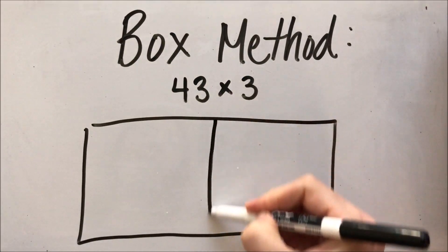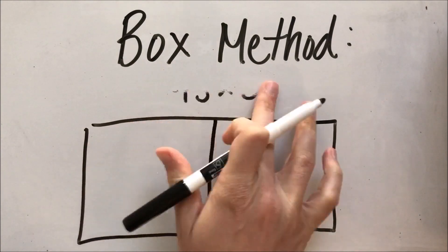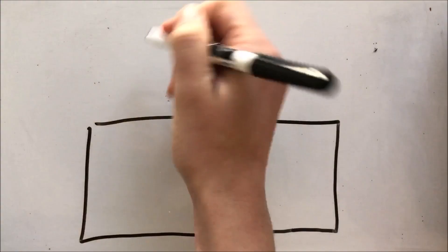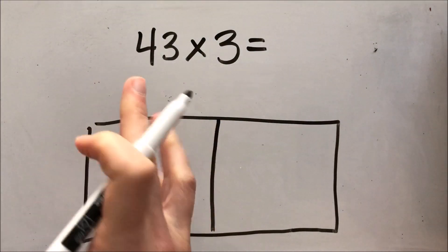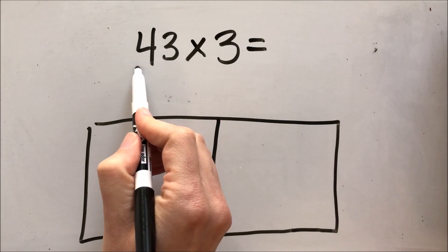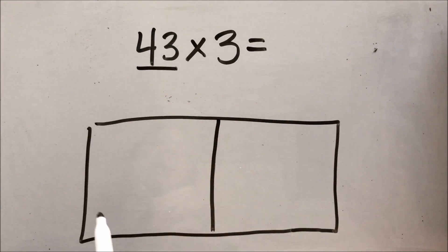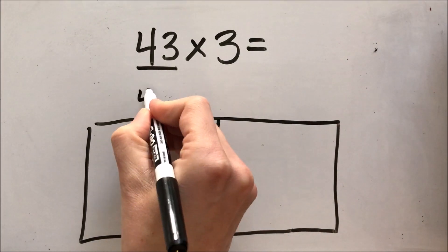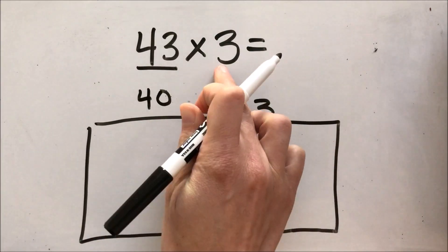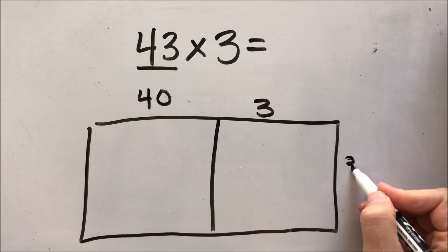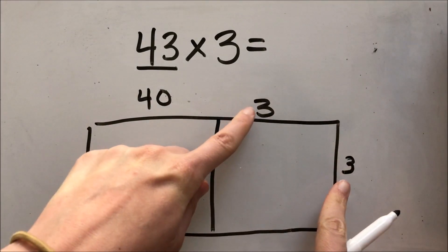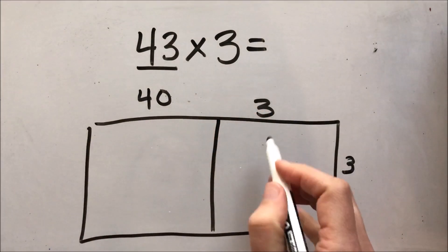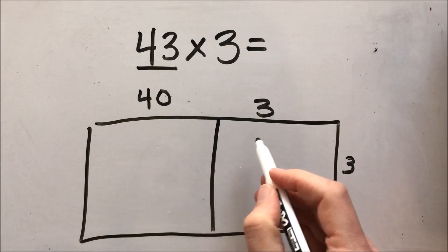Now that I have my box, I'm going to divide it up so I have my tens and ones. When I use the box method, I'm going to split up my tens and ones. I look at 43, and if I were to write this in expanded form it would be 40 plus 3. So that's what we write on top of our box: 40 and 3. We're multiplying by 3, so I'm going to put my 3 on this side. I'm going to do different multiplication problems in each of these boxes.